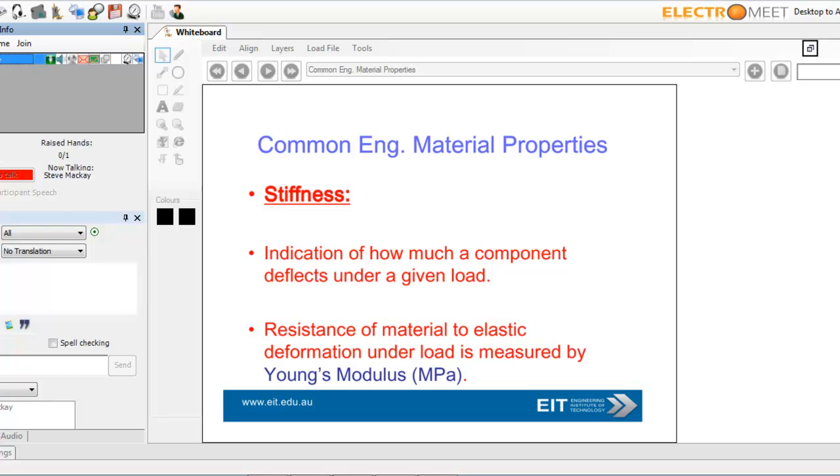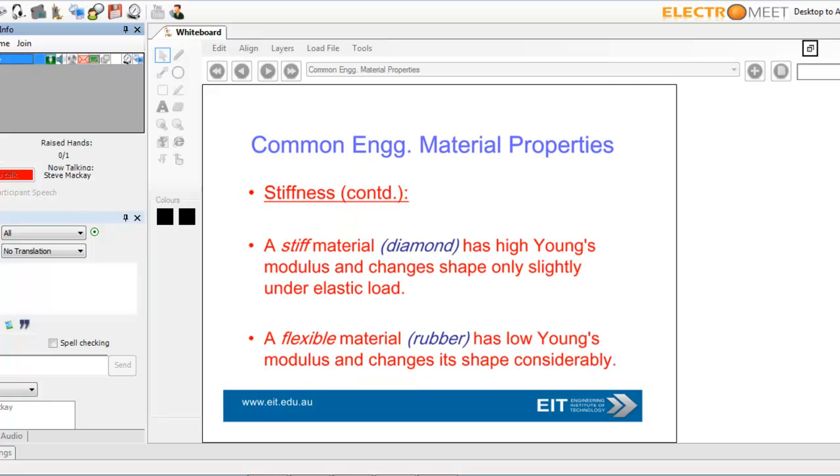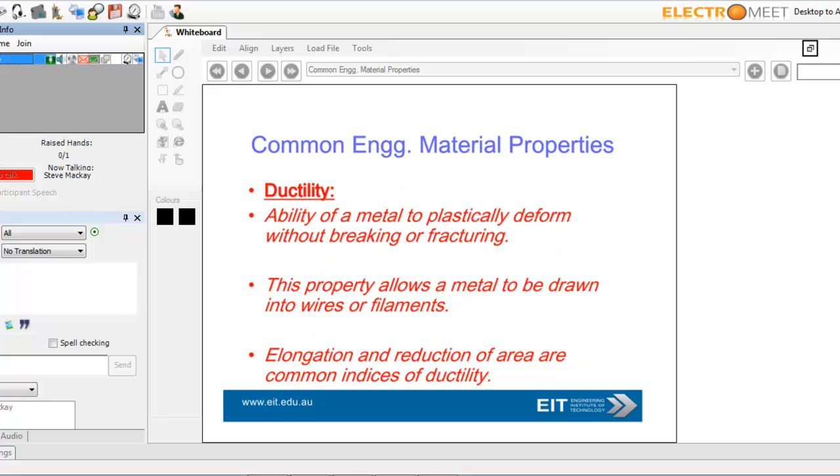Stiffness is another important thing, and this will come back when we talk about vibration - how much a component deflects under a given load. The stiff material, such as diamond, has a very high Young's modulus and changes shape only slightly. For example, rubber has a low Young's modulus and changes shape considerably, and goes back to what it was.